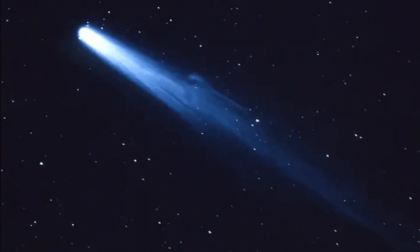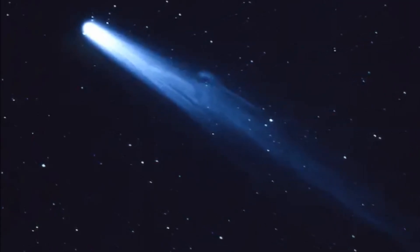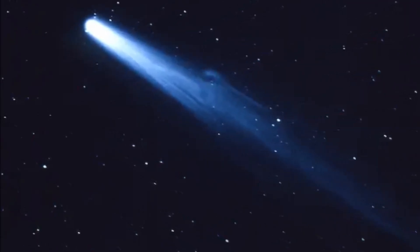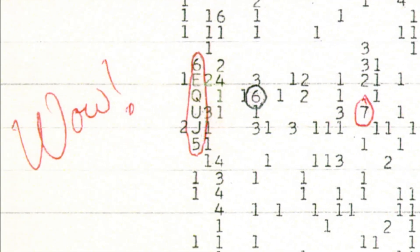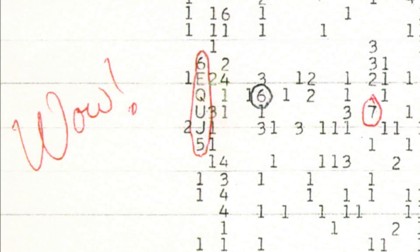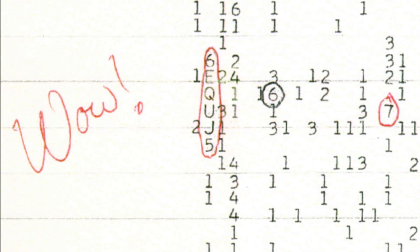The transmission lasted for 37 seconds and was found to have come from the constellation Sagittarius. Astronomer Dr. Jerry Eman, who was studying data from the telescope, was shocked when the radio signal came in this form, from an apparently empty place in space.